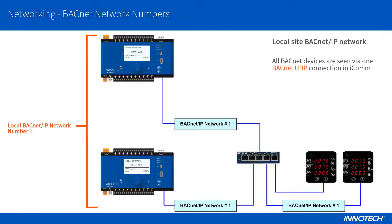On this local site, we have two Omni controllers and two BACnet over IP power meters connected. As this is using a local network for communications, there is only one BACnet network required. Its network number is set to the default of 1. All BACnet devices will be discovered via one BACnet UDP connection in ICOM.